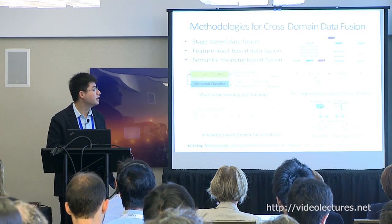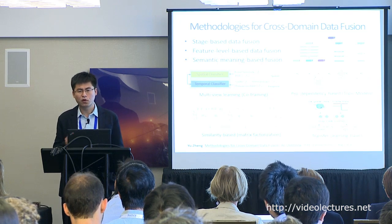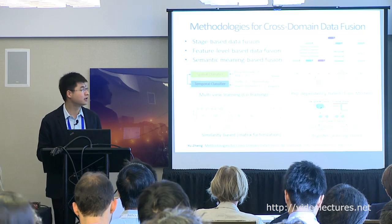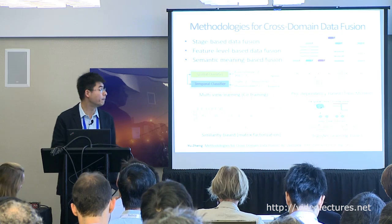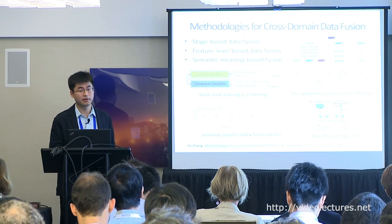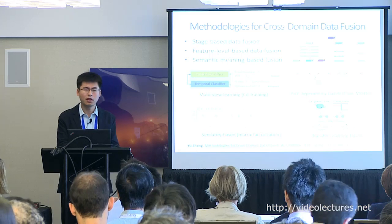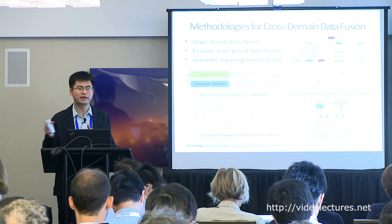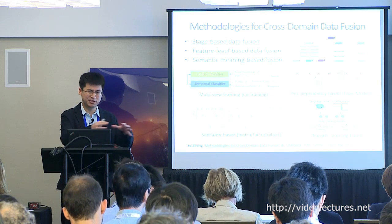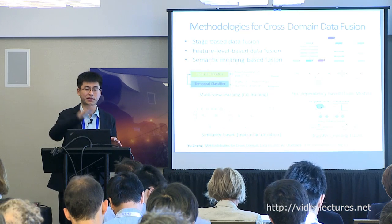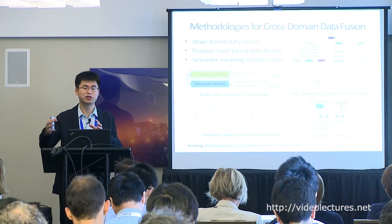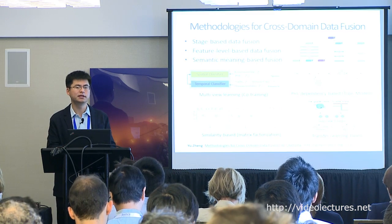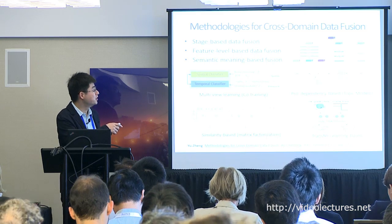That's the transfer learning approach. Let me now summarize the methodology for cross-domain data fusion, which is important for data mining and urban computing. The first type is stage-based data fusion: in the urban planning example, we first used road network data to partition the city into regions, then projected trajectory data onto those regions to form a region graph containing knowledge from both data types.